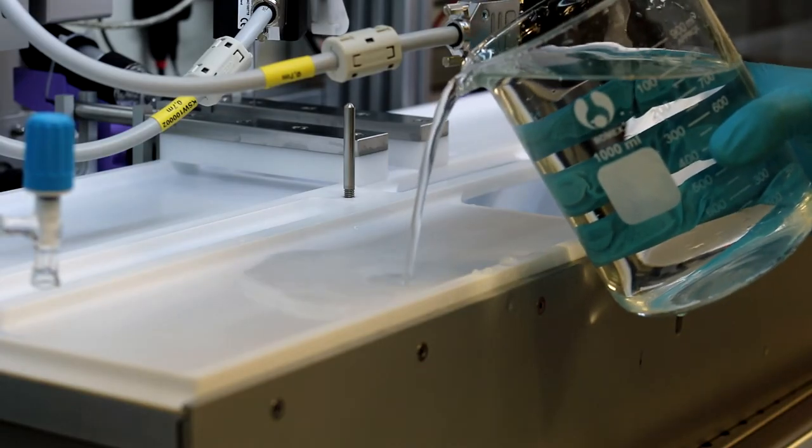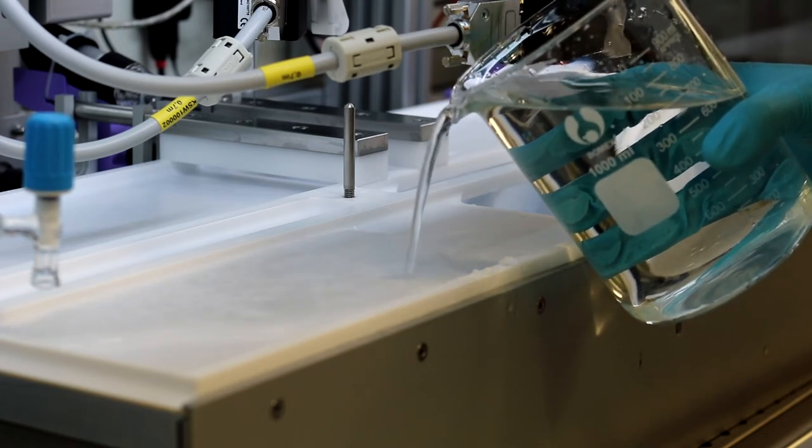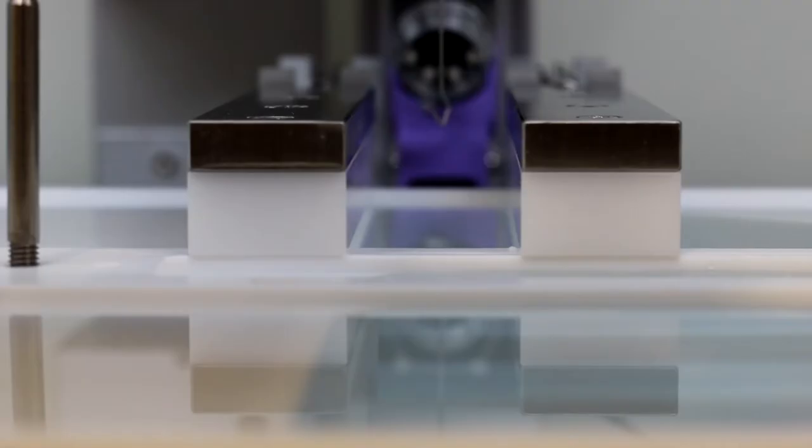Ensure your barriers are in the closed position, then fill your trough with deionised water until the water surface is level with the edges of the trough. The water interface trapped between your barriers is now isolated.